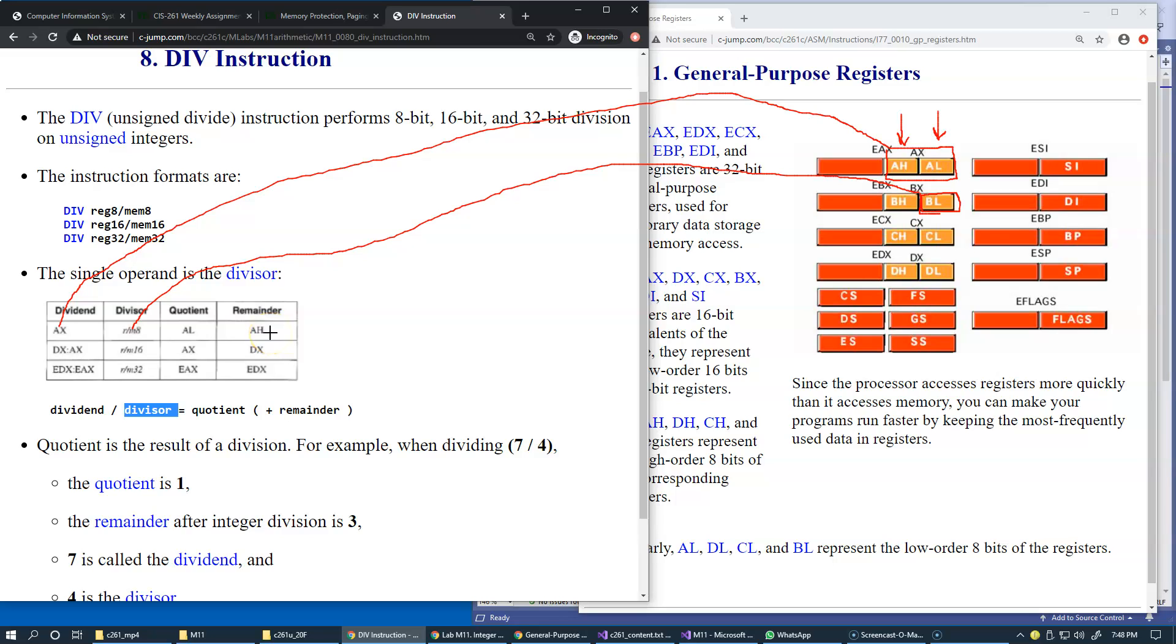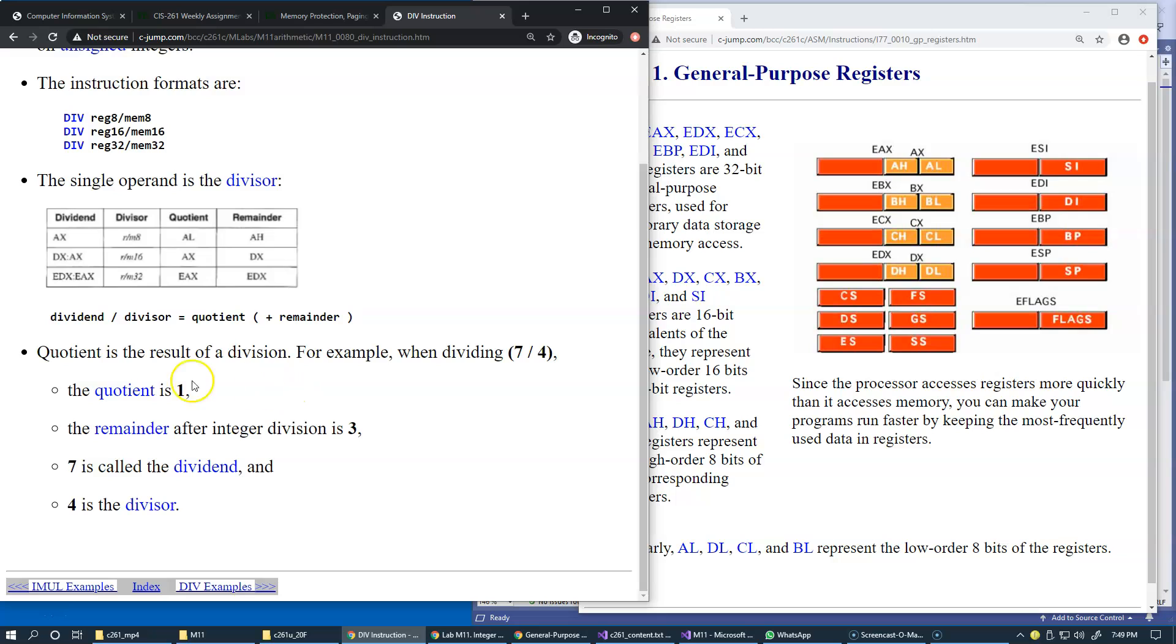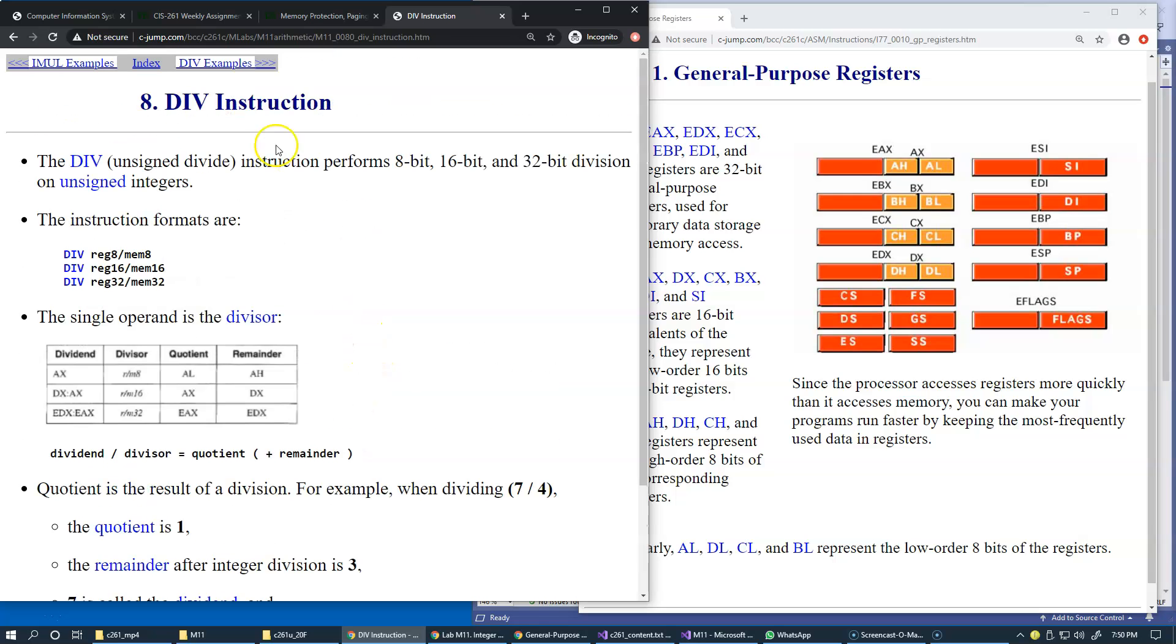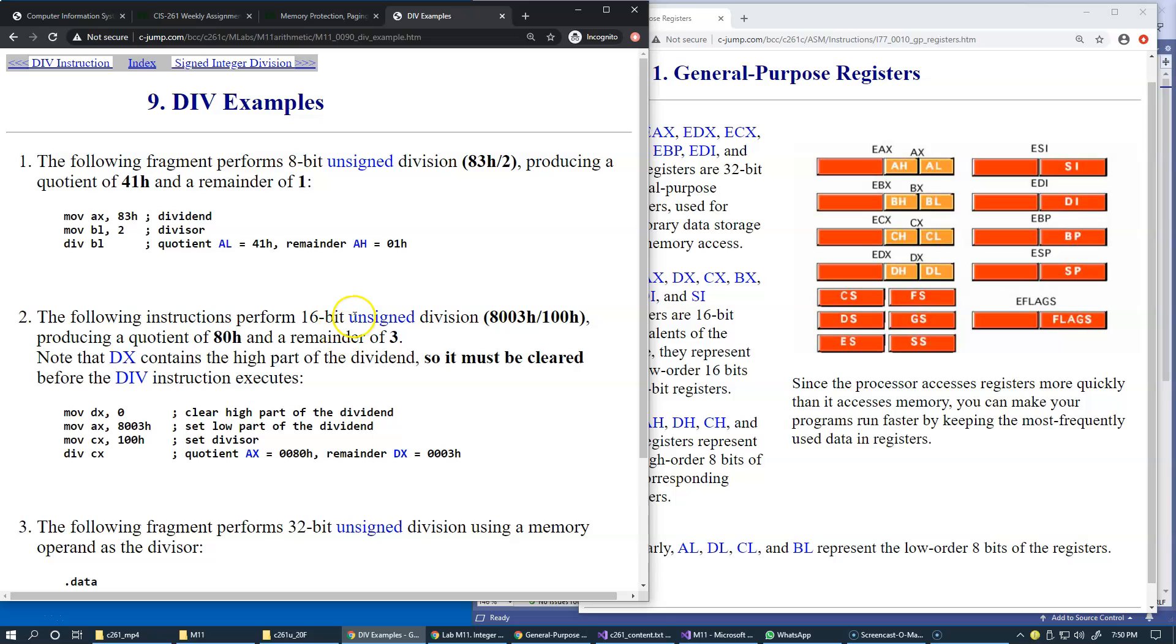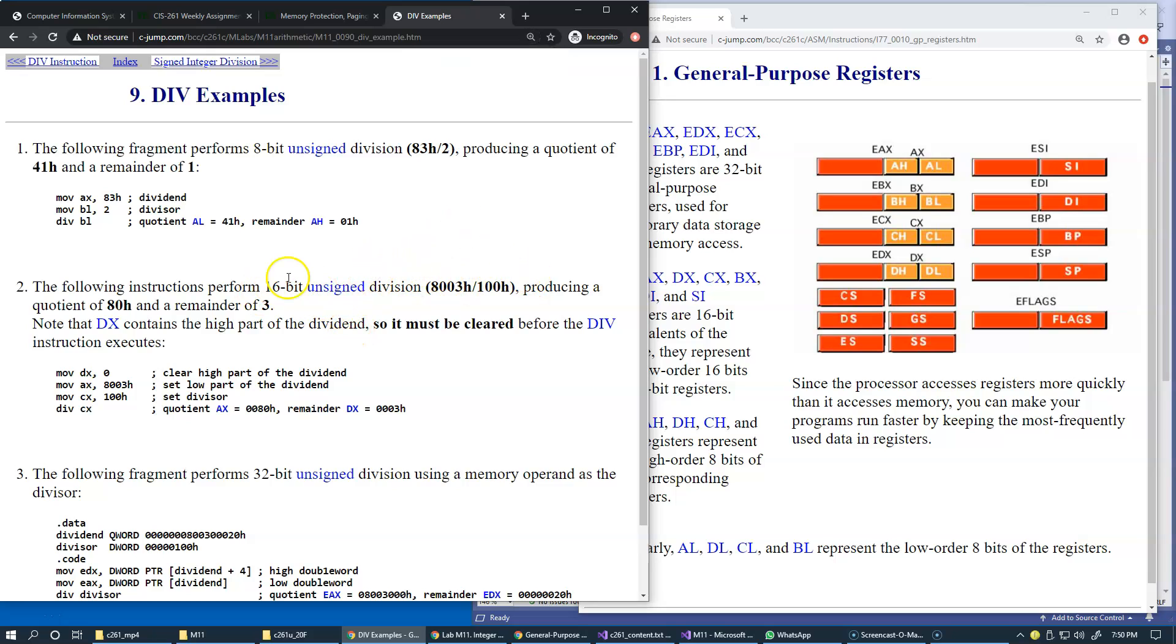You instantly get integer remainder by just doing one division. Both quotient and remainder are available. You don't need to execute two different instructions to obtain these two values. Quotient is the result of the division. Dividing seven by four, the outcome of this is one, but the remainder is three. So a few examples here for division instruction, let's take a look.